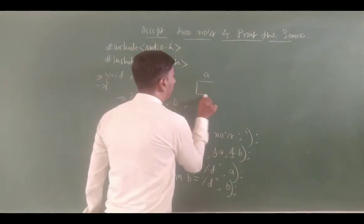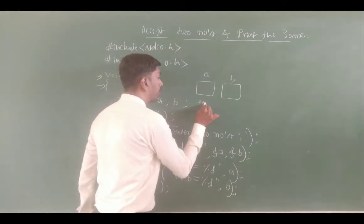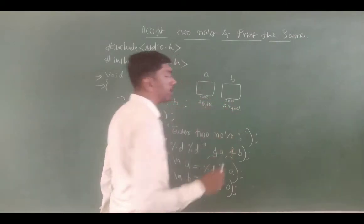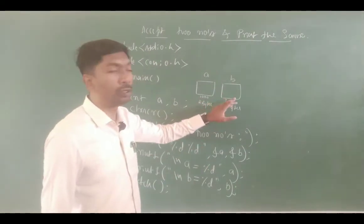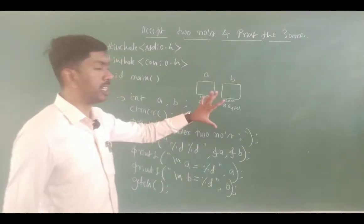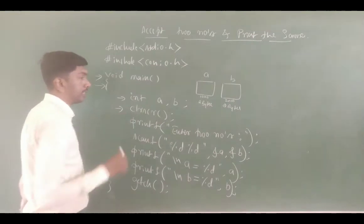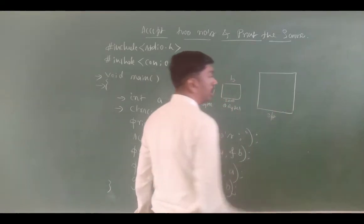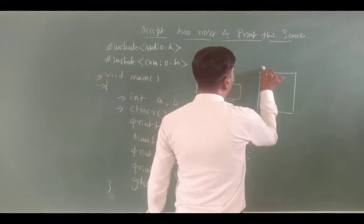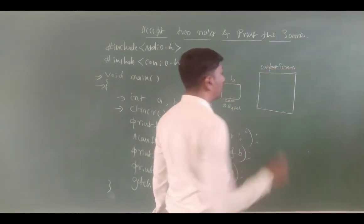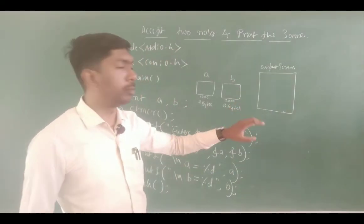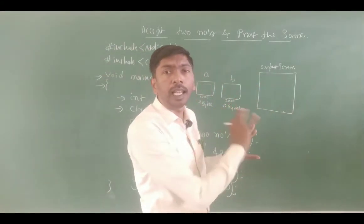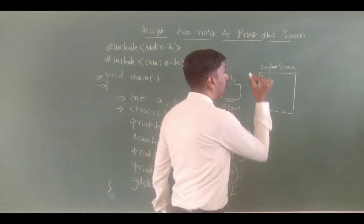int a, b creates memory blocks. A memory block is created for a and b — int is 2 bytes. Assume address 1000 for a and 2000 for b. A value block and b value block are created. Next, clrscr() clears the output screen — assume this is the output screen — it is completely cleared and the cursor is placed at the top-left corner.